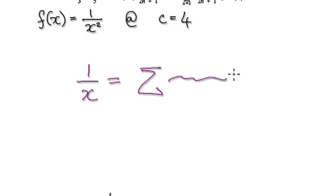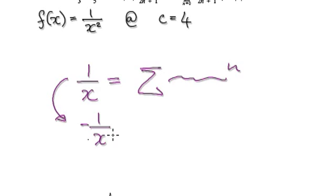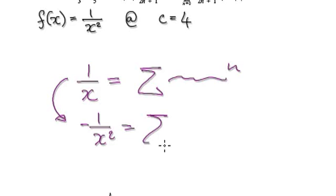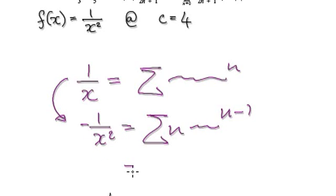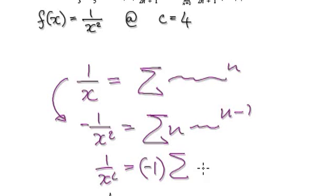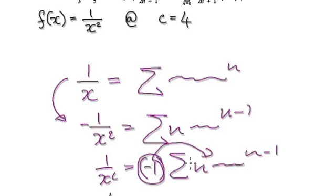It would be something like this, something to the power of n. And then we're going to differentiate this, so that will give us negative 1 over x squared equals — and remember, we've done this before, you can actually differentiate a summation — so it would be something to the n minus 1. Then we times both sides by negative 1. So this is the general idea, and then we can push that minus 1 in. Let's start again.